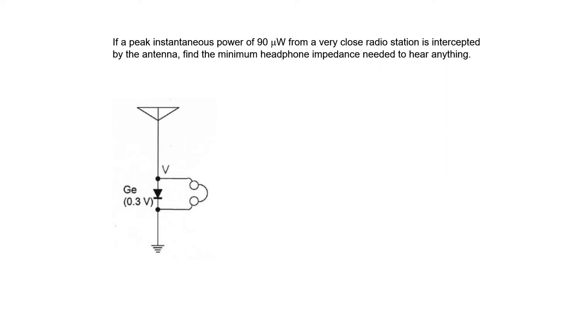In order to understand this question, let's look at an example problem. If a peak instantaneous power of 90 microwatts from a very close radio station is intercepted by the antenna, let's find the minimum headphone impedance needed to hear anything. It's important to notice the key words: to hear anything.